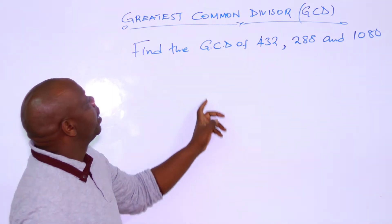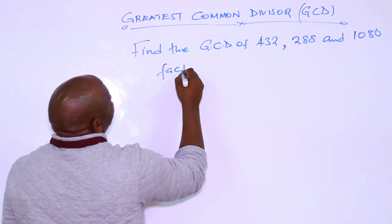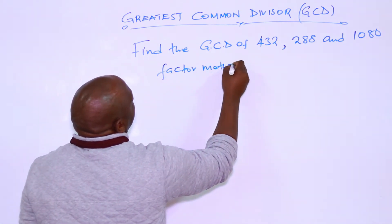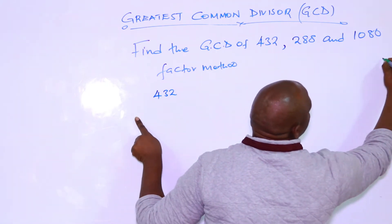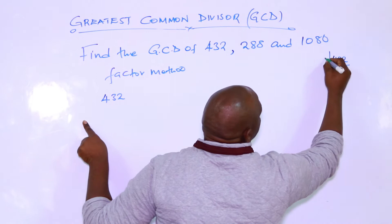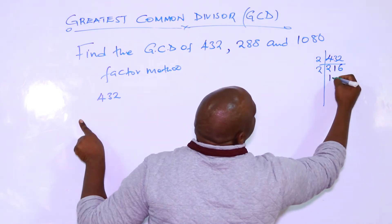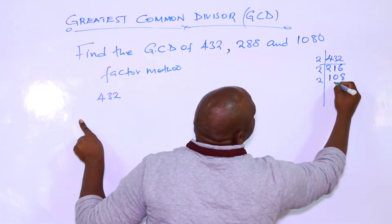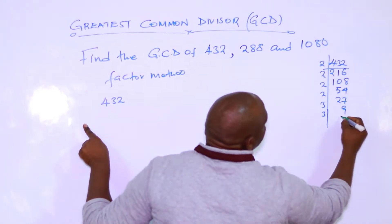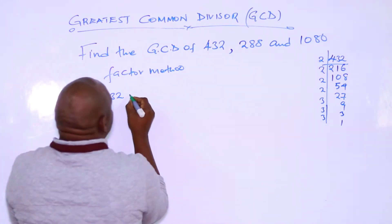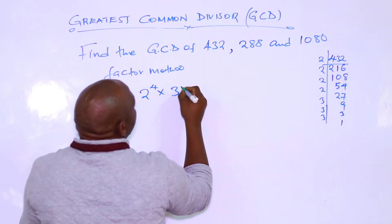Next, we want to get the GCD of 432, 288, and 1080 by the factor method. So you start by getting the factors of 432. By 2: 216, by 2: 108, by 2: 54, by 2: 27, by 3: 9, by 3: 3, by 3: 1. So 432 equals 2 to the power 4 multiplied by 3 to the power 3.